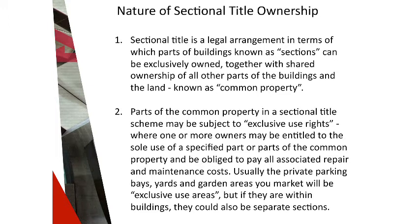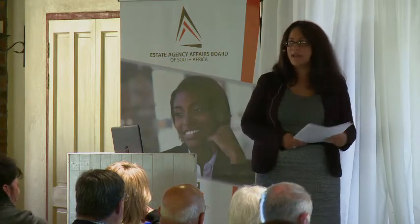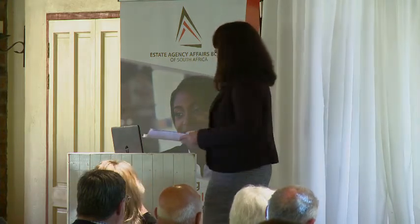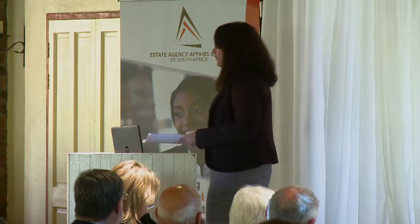Unless the sectional plan specifically makes some other arrangement, each section extends to the median line or center of its walls, floors and ceilings — not real lines, but imaginary midpoints that split a section between the owner's liability and the body corporate's liability. On the sectional plan, each section is given a specific number. The example of a residential unit on the fifth floor might be section 7, and the garage on the basement floor might also be part of section 7, or it might be a section on its own, or it could be common property or an exclusive use area — either registered or created.